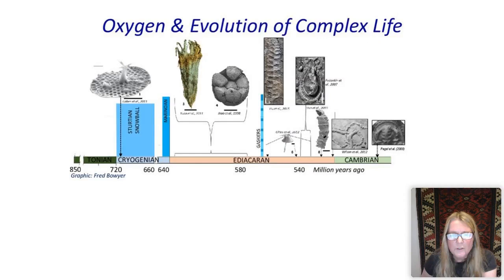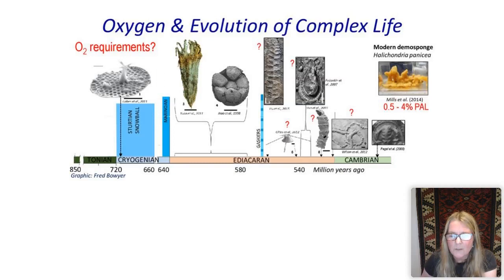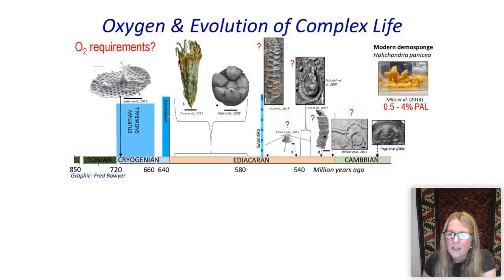When we think about the oxygen demands of these extinct biota, we really have no idea what the oxygen demands of some of these forms might be. The cat was put amongst the pigeons recently when it was proposed that some baseline vertebrates — particular sponges — have much lower oxygen demands than forms that follow metabolically demanding carnivorous lifestyles. The modern breadcrumb sponge was found to exist at extraordinarily low percentages of present atmospheric levels of oxygen, raising the possibility that our oldest animal fossils may have been adapted to very low oxygen conditions.